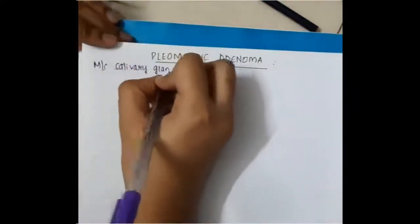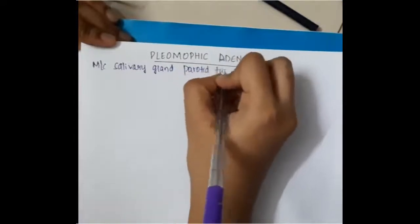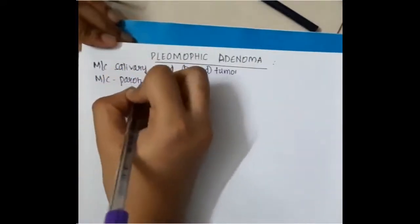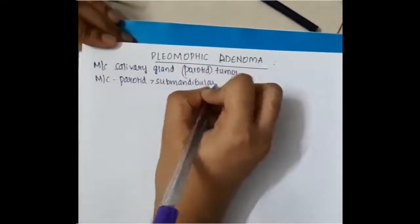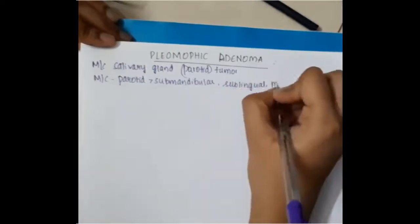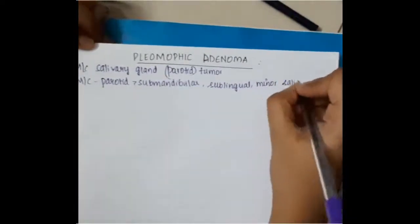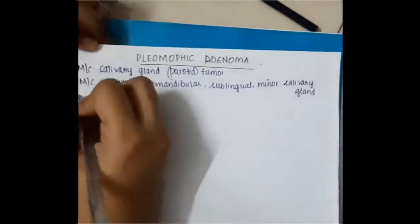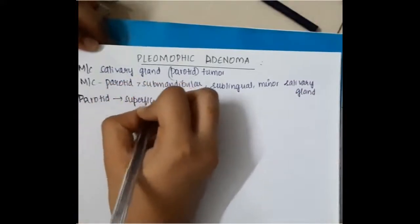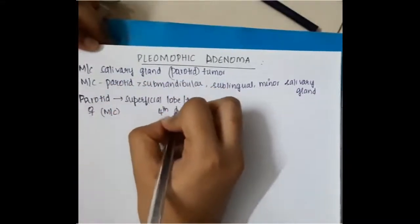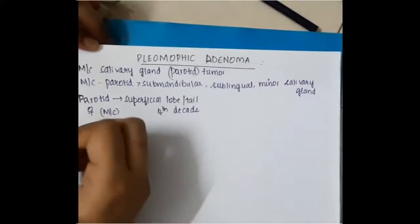Pleomorphic adenoma is the most common salivary gland tumor which is seen. This pleomorphic adenoma is most commonly seen in parotid more than submandibular, more than sublingual, then also minor salivary glands. So, it is most common in parotid gland. In the parotid glands also, it is most commonly involves the superficial lobe or tail of the parotid gland.